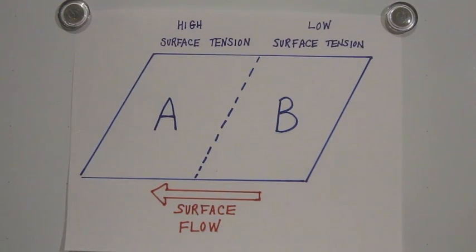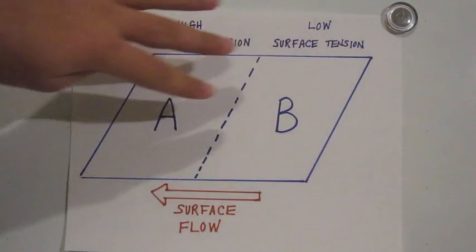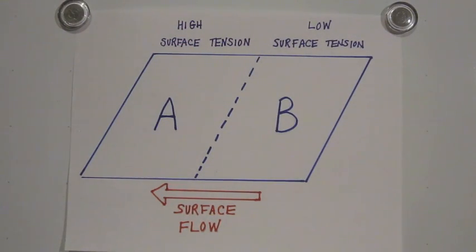This force imbalance will cause an observable flow at the surface from low surface tension regions to the high surface tension region.